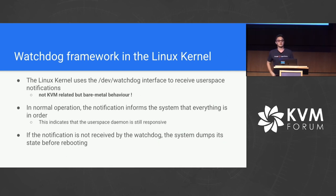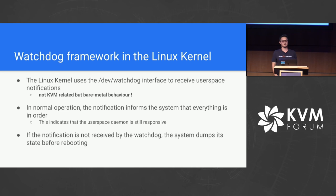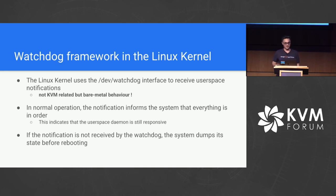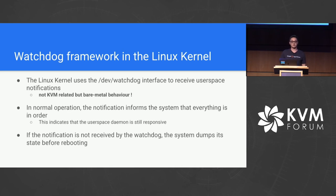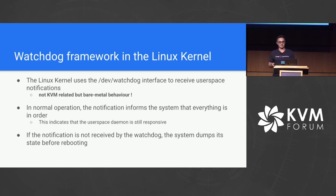Let's take a look at the current existing infrastructure for watchdogs that Linux has to offer. The Linux kernel uses the /dev/watchdog interface, and this interface is used for receiving user space notifications from a daemon. This is not a KVM-specific mechanism — it's a bare-metal behavior that has existed for a while. In normal operation, the notifications inform that the system runs in the expected state and everything is in order. If the notification is not received by the watchdog, the system dumps its state before rebooting, prints a message in dmesg, and then resets the system so it can return to a normal state.